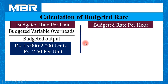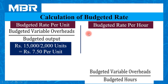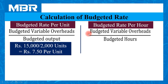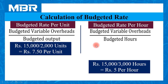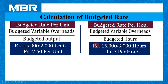Similarly, we calculate the budgeted rate per hour. The formula remains the same, only the denominator changes: budgeted variable overheads divided by budgeted hours. That is rupees 15,000 divided by 3,000 hours, giving a budgeted rate per hour of rupees 5. Now we have budgeted rate per unit and per hour.